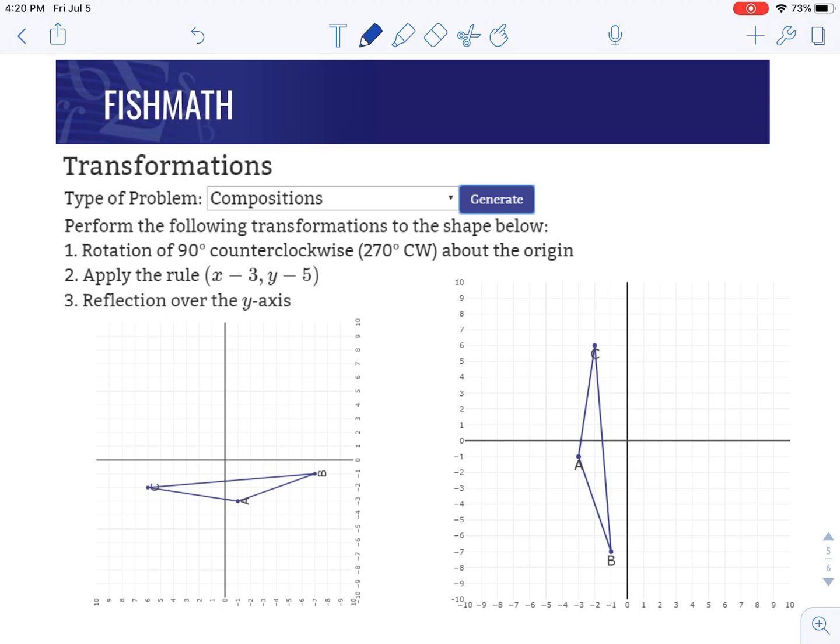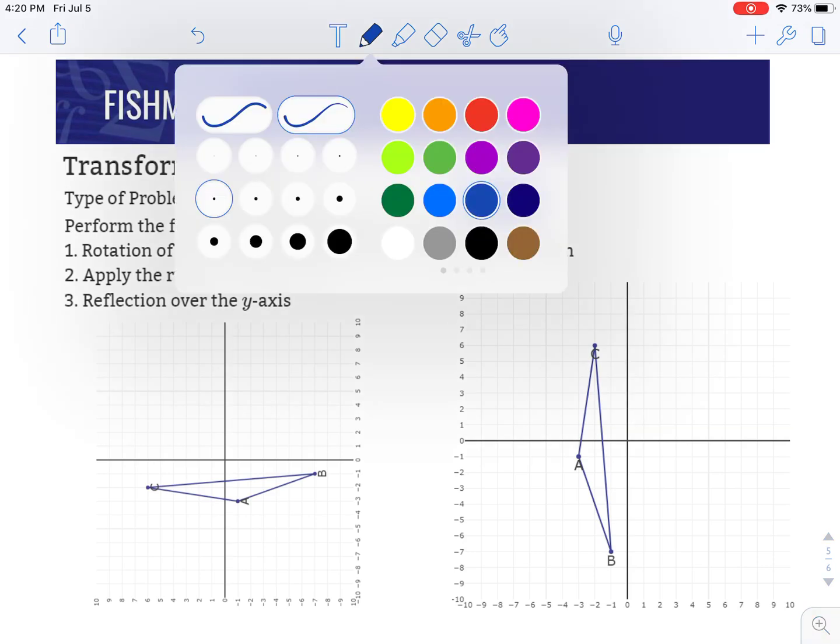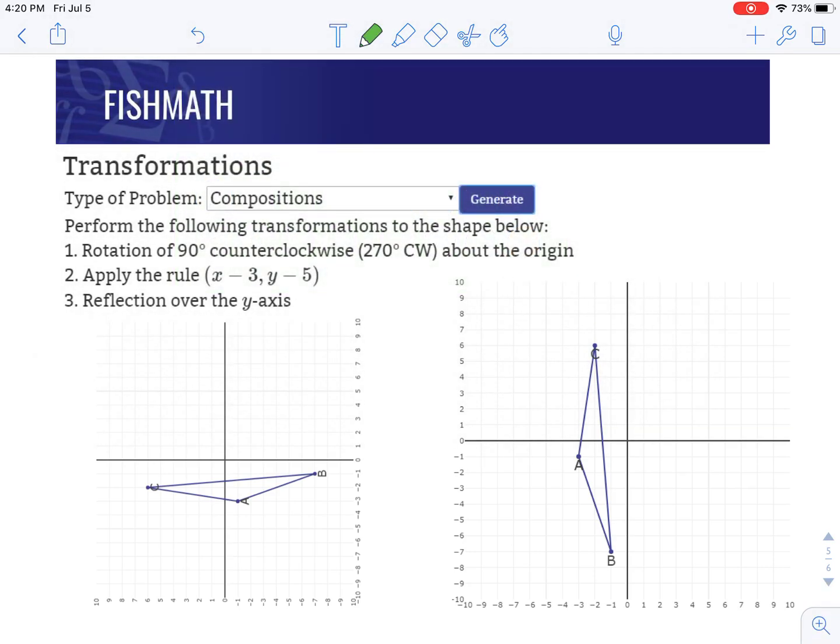We're going to graph these new locations looking at our answer over here, that'll tell us how to graph it on the other grid on the right, our original graph. When you're doing this on paper, just simply take your paper, turn it according to the directions to look at the new locations, and then turn it back for each point.